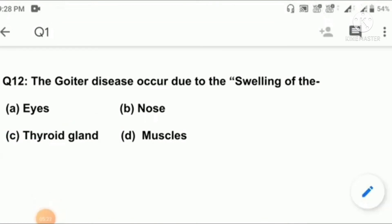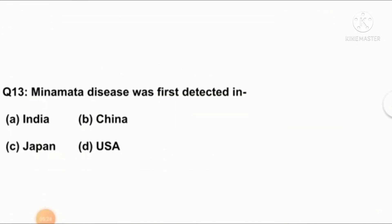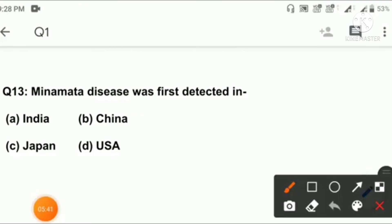Question number thirteen: Minamata disease was first detected in A: India, B: China, C: Japan, D: USA. Right answer is option C: Japan.